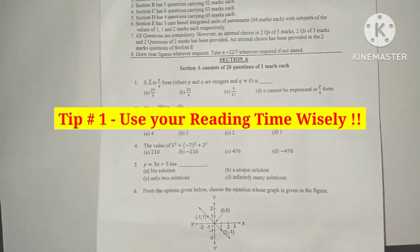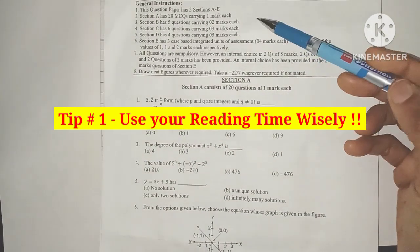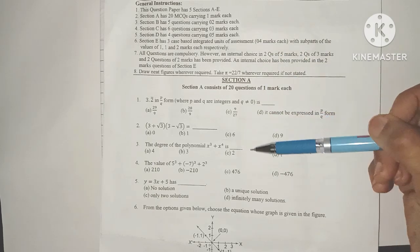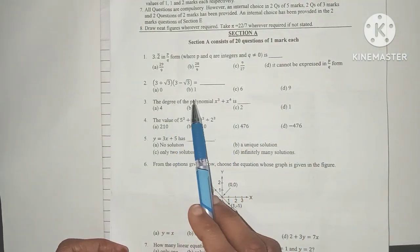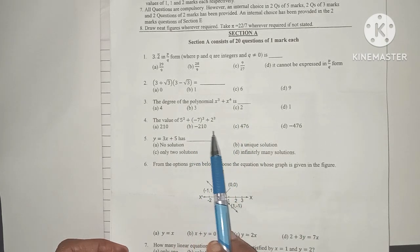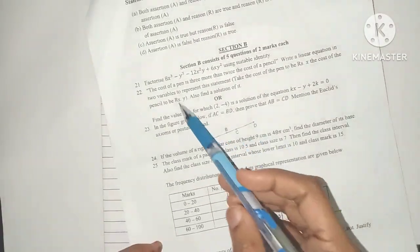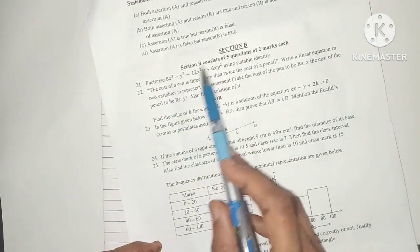The first tip is to use your reading time wisely. Once you get the question paper, 10 to 15 minutes are usually given as the reading time. You can use this time to read each question thoroughly and decide which options you will choose in case of choice questions.